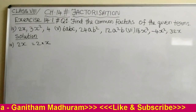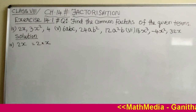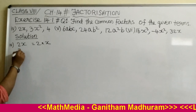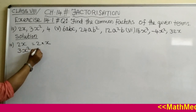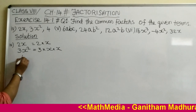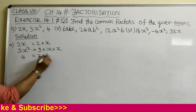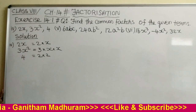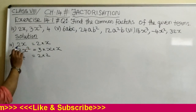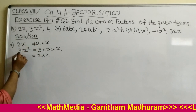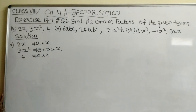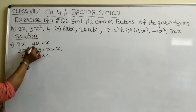The next question asks for the common factors of 2x, 3x², and 4 — three terms are given. The factors of 2x are 2 into x. Factors of 3x² are 3 into x into x. The factors of 4 are 2 into 2. Observing these, there is no common factor other than 1, since 2x can be written as 1 into 2x, 3x² as 1 into 3 into x into x, and 4 as 1 into 2 into 2. So 1 is the common factor.